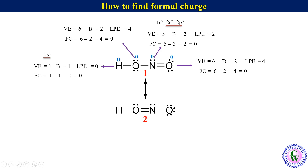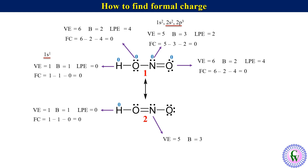Now let's take structure 2. For hydrogen: Ve = 1, B = 1, Lpe = 0. Formal charge = 0. For nitrogen: Ve = 5, there are 3 covalent bonds so B = 3, and 2 electrons as lone pair so Lpe = 2. Thus formal charge = 5 − 3 − 2 = 0.